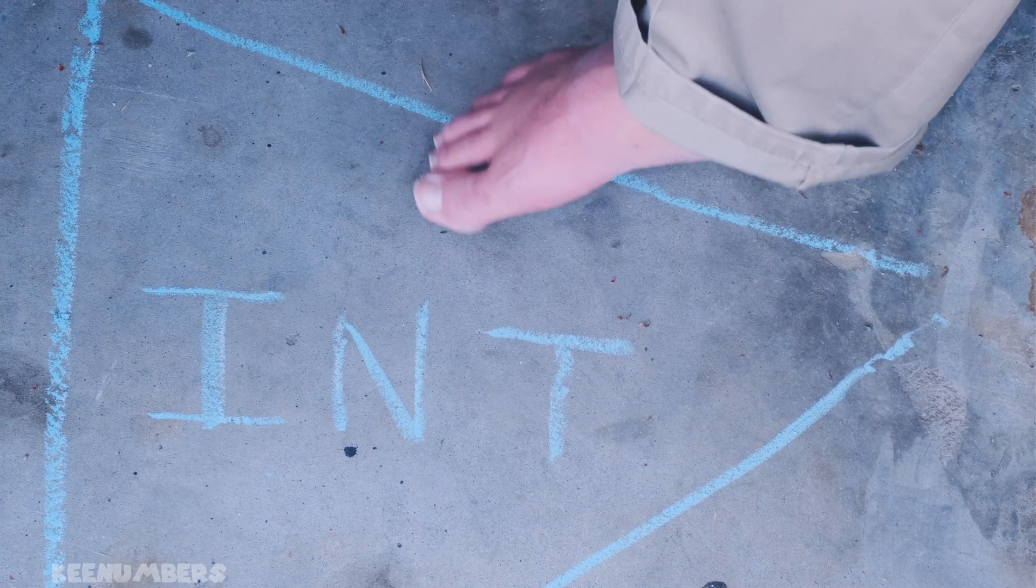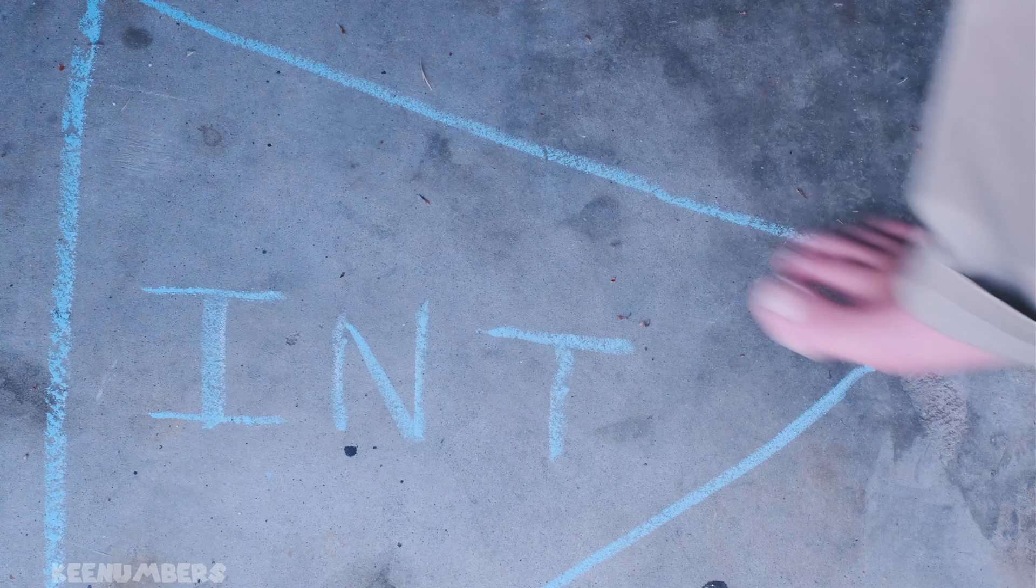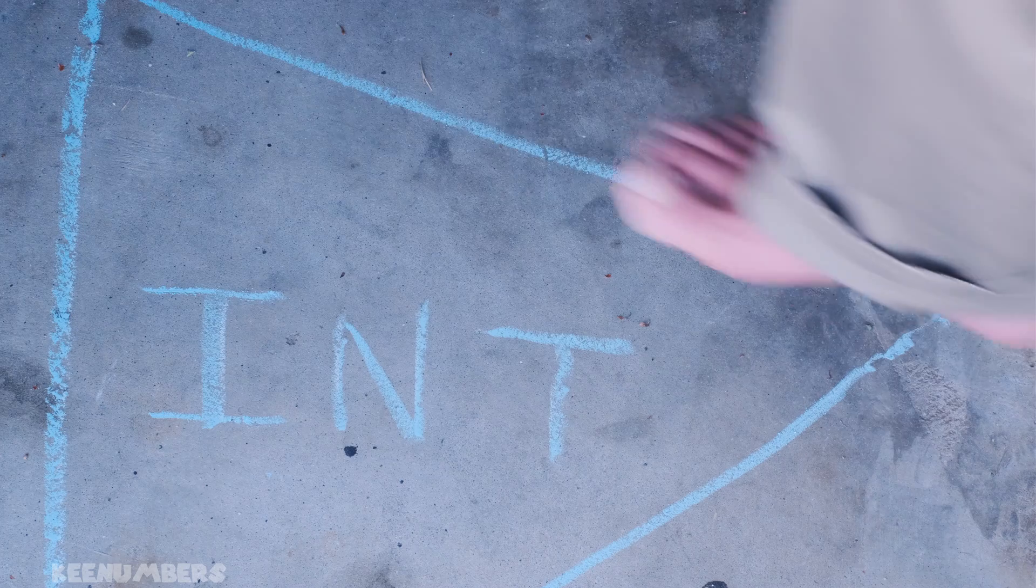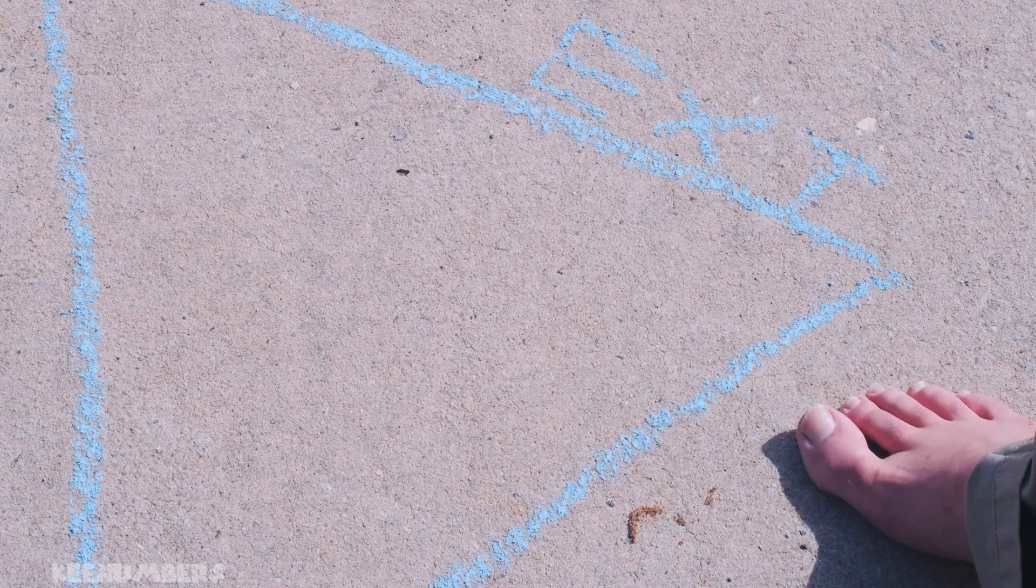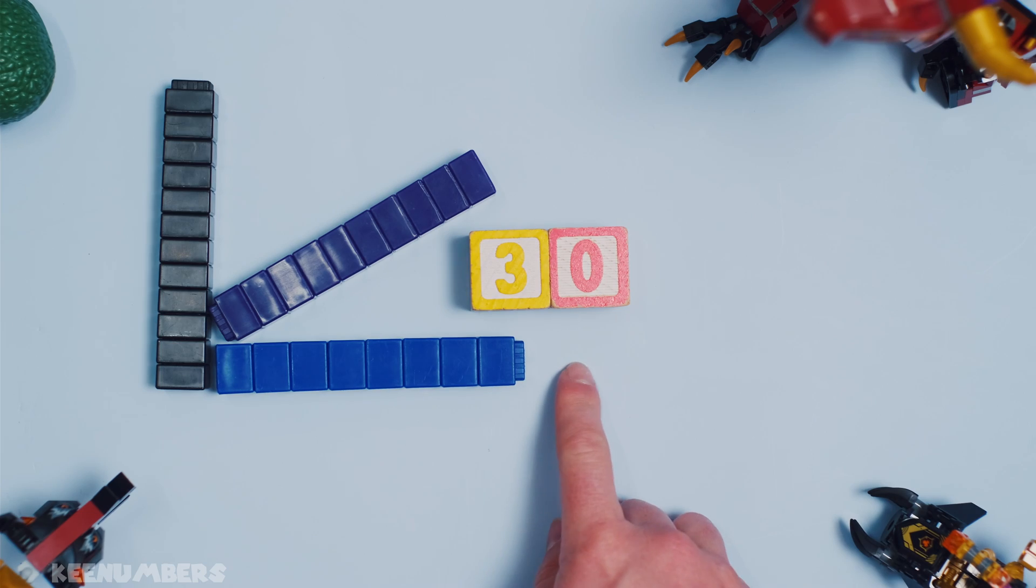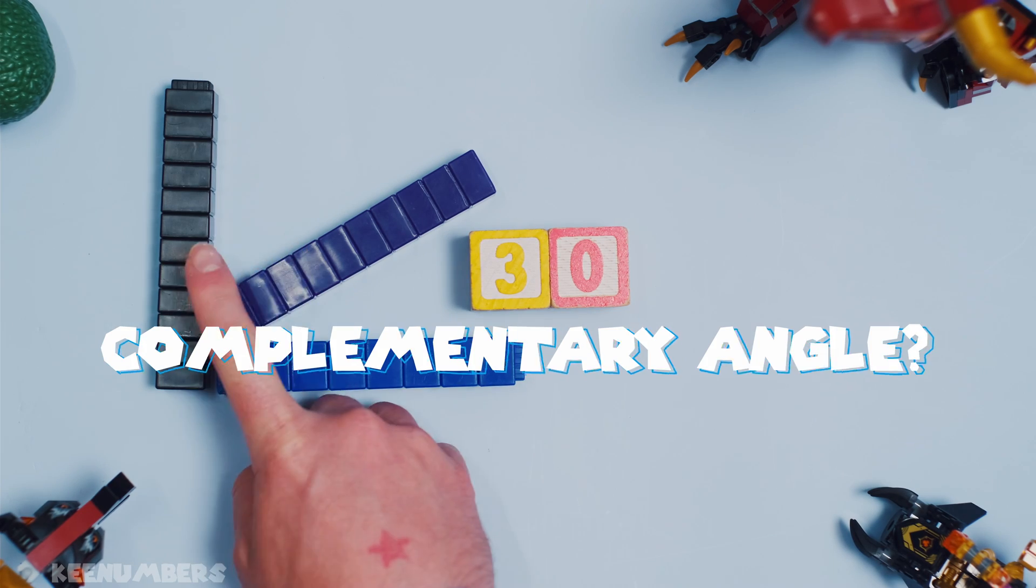Interior just means it's inside the triangle. Exterior means outside. Interior means inside. 30 degrees. What's the complementary angle here?